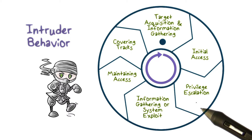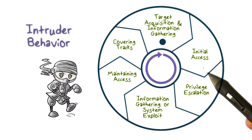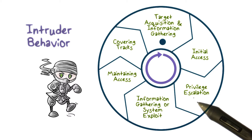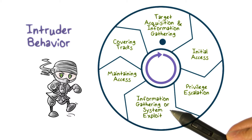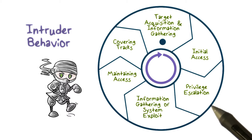The third step is privilege escalation. This is taken after the initial access, and the attacker would try to use a local exploit to escalate the privilege from, for example, a normal user to root privilege on the target system.